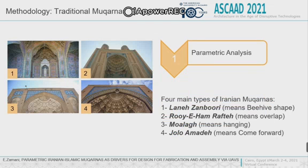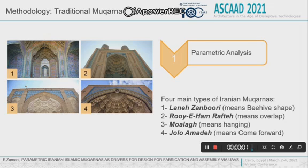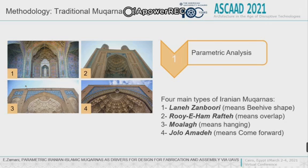Iranian Mogharnas could be classified into four main categories, although there are some other types of classification mentioned in our paper. In this study, we used the classification mainly used in Iran. We have four main categories of Iranian post-Islamic Mogharnas: Lani Zamburi, Ruy Hamrafdeh, Muallaq, and Jula Ahmada. You can see the English translation of each of these Persian names.